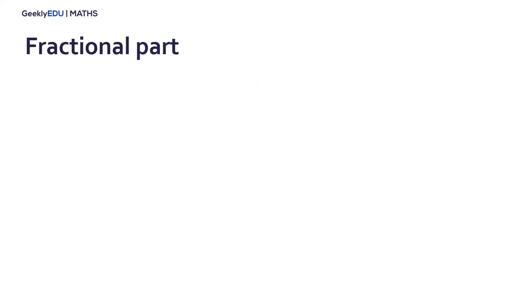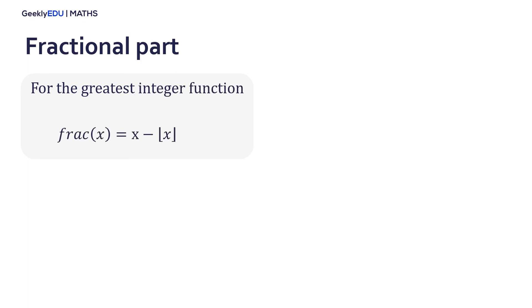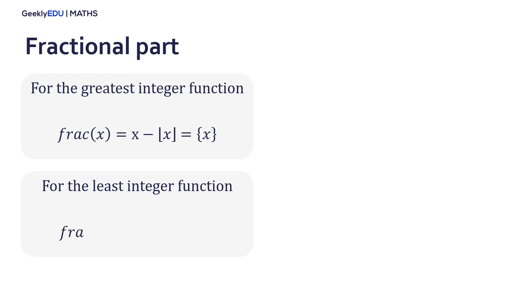You might wonder what happened to the other part of the x value — that is called the fractional part. For the greatest integer function, the fractional part is the value x minus the greatest integer value. For the least integer function, it is the least integer value minus the x value.